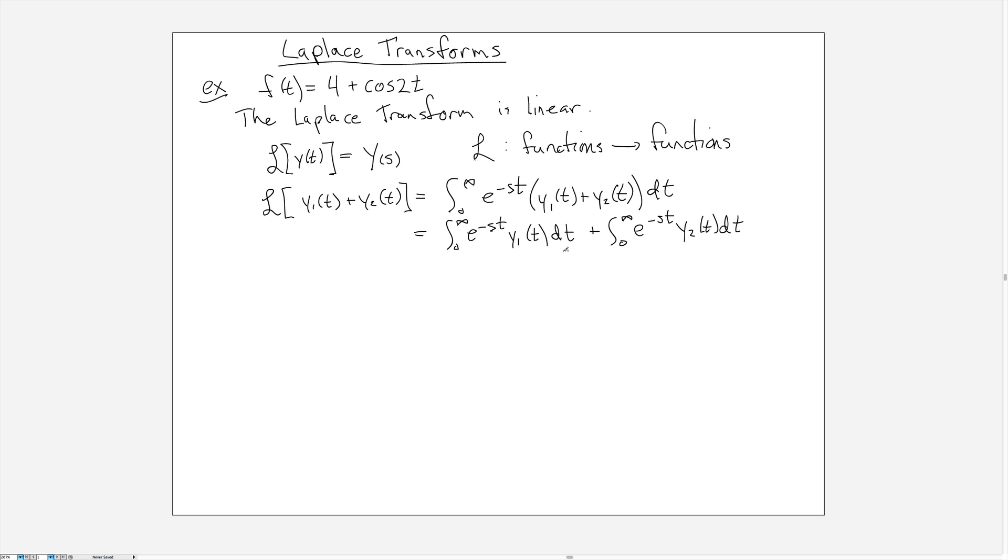In other words, just the s values for which both of these converge. And then I can always write this expression here for the complete Laplace transform broken up into these two pieces. Once we've done that, we can see that this is just the Laplace transform of y1(t) plus the Laplace transform of y2(t).